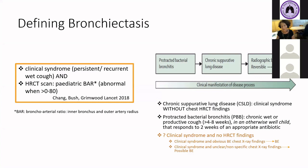We know the term chronic suppurative lung disease — the classic clinical syndrome without HRCT findings. But what do we call the clinical syndrome in a child with the classic clinical syndrome but no access to HRCT? This group is not necessarily the same as the chronic suppurative lung disease group and will be very familiar to many clinicians working in high-prevalence areas. You could have a child with a classic clinical syndrome and obvious bronchiectasis on chest x-ray — these children need to be assessed and managed as having bronchiectasis. More troublesome is the child with a clear clinical syndrome but a normal or non-specific chest x-ray. We know that chest x-ray findings are very non-specific and not sensitive for bronchiectasis, so these children should be treated as possible bronchiectasis with appropriate assessment and management.